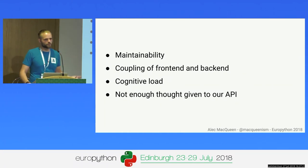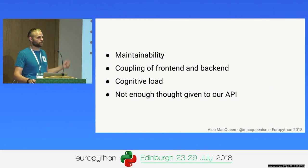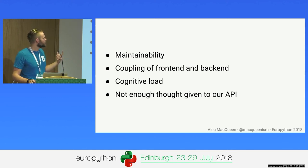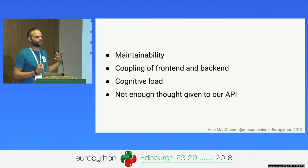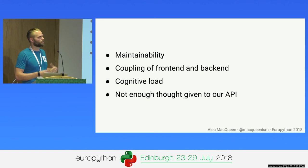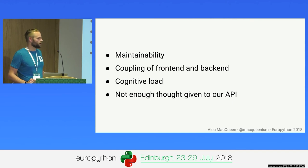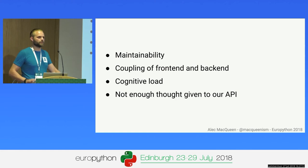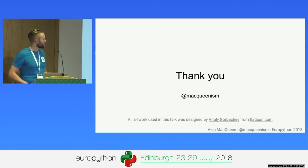So let's go back to the problems that we were having. Maintainability: there's one API version, our documentation is easy to keep updated. The coupling of the front end and the back end is completely separate now because the front end needs to know what data it's going to get. The cognitive load is less — we're just writing pure Python classes. And not enough thought was given to our API? Well, that's the first thing we think about when we wake up and the last thing we think about when we go to sleep. So I think that's about it. Thank you very much for listening. Any questions?